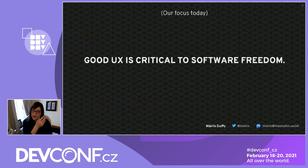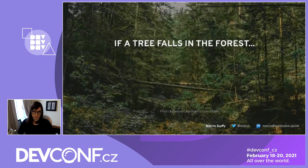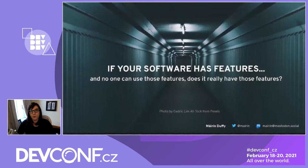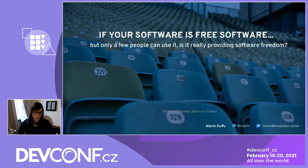Our focus today is that good UX is critical to software freedom. I have three questions to get you in the thinking space. You've probably heard this one before: if a tree falls in the forest and no one is around to hear it, does it make a sound? So if your software has features and nobody can use those features, does it really have those features? And the third: if your software is free software but only a few people can use it, are you really providing software freedom?